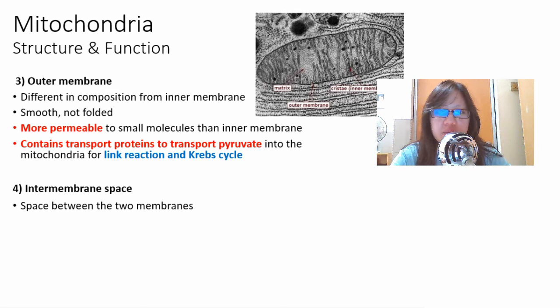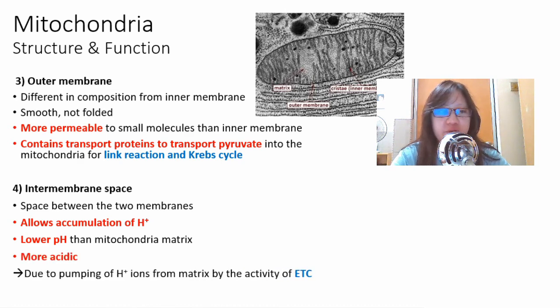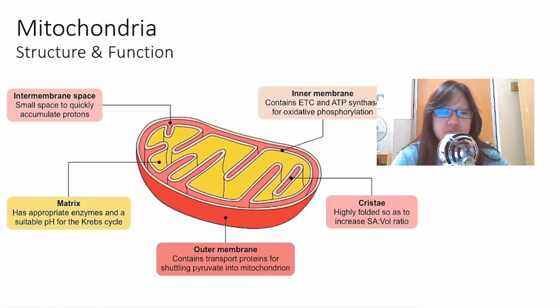Number 4 is the intermembrane space. This is the space between the inner and outer membrane. What special features would it have? It allows accumulation of H plus ions. There will be many H plus ions in there. You will expect it to have a lower pH due to the high concentration of H plus ions, therefore more acidic.